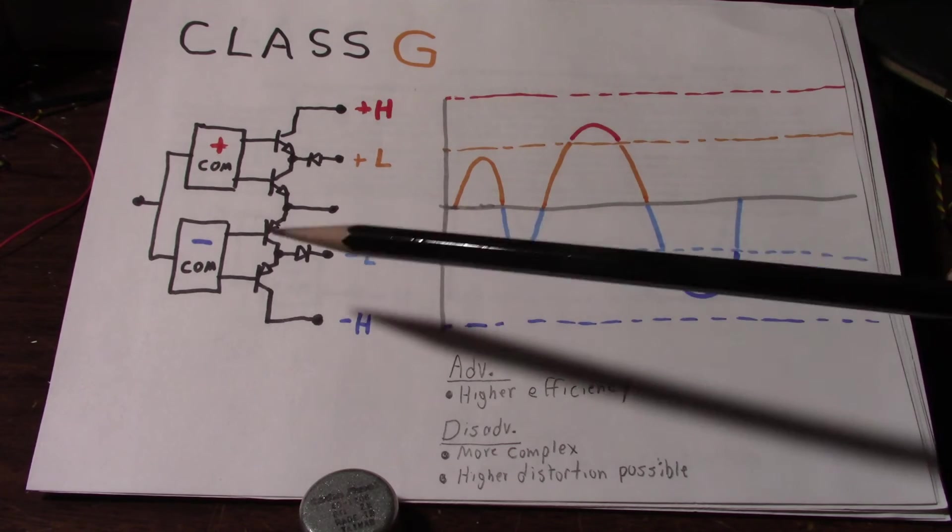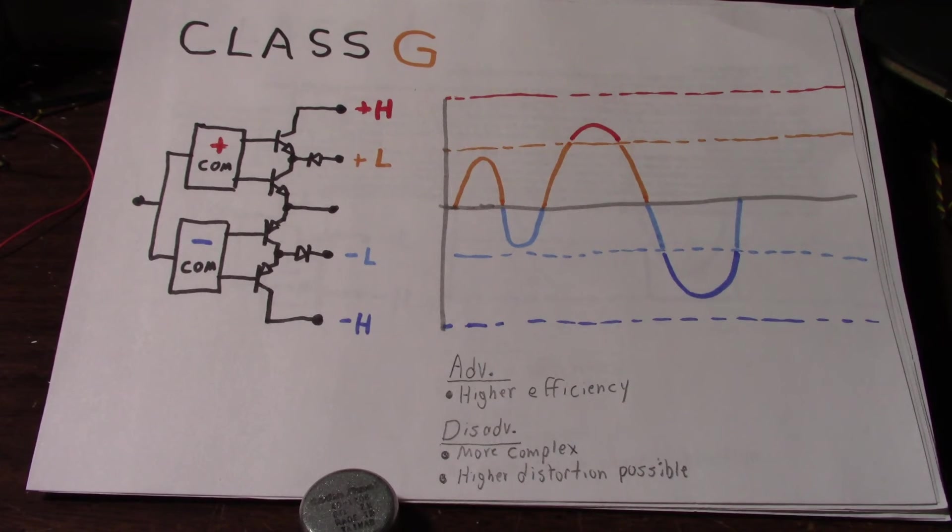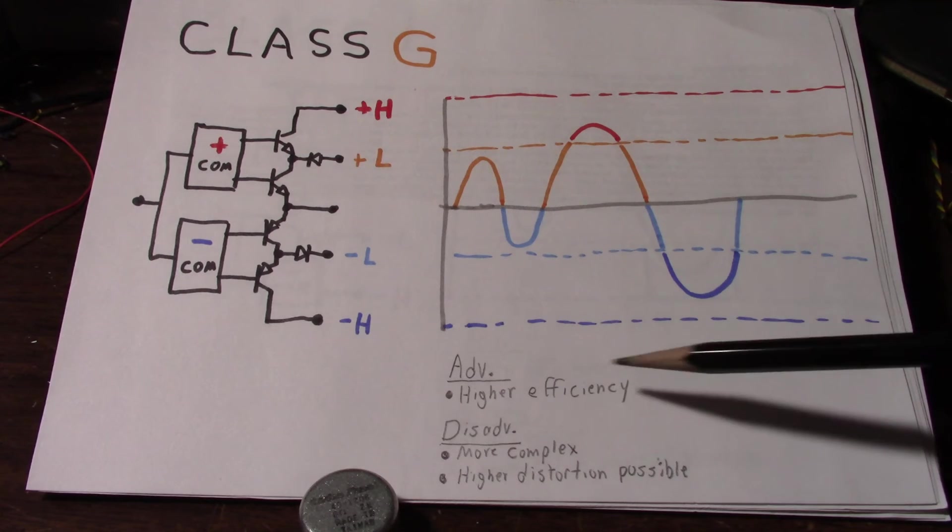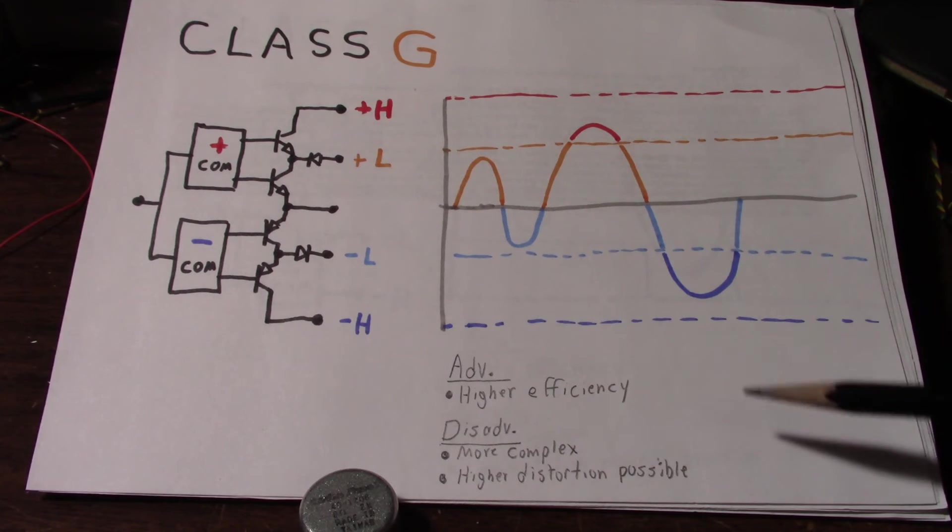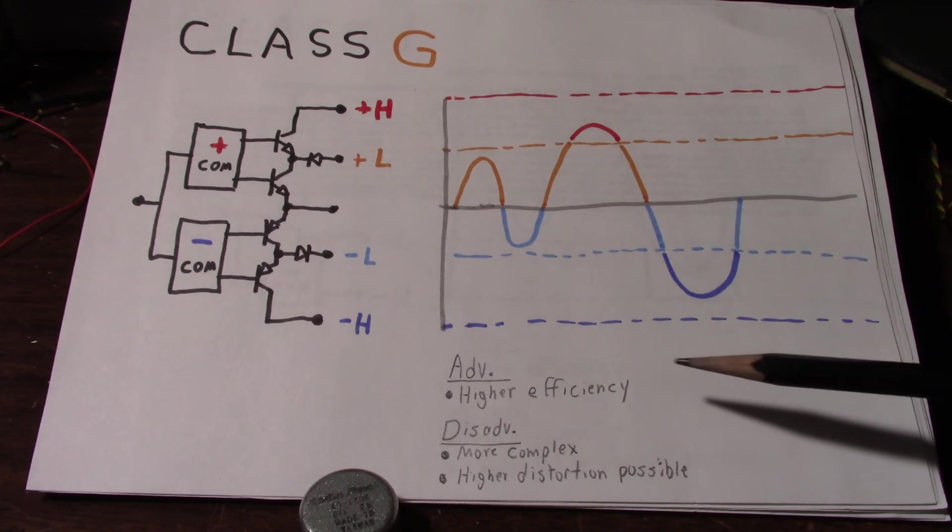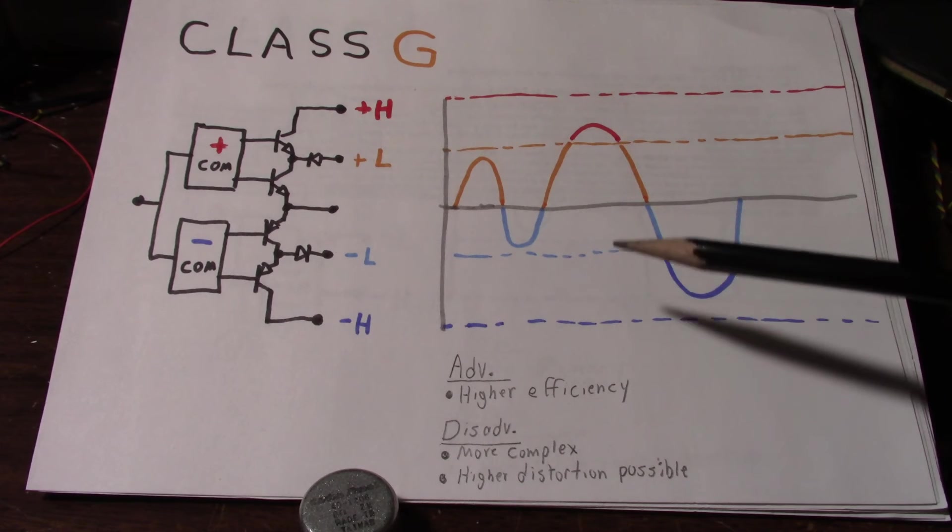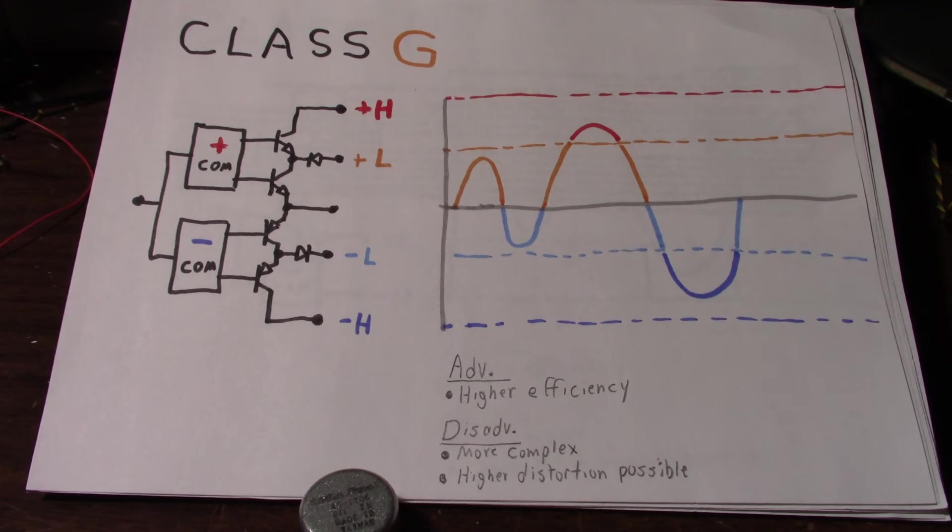One extreme example of Class G was Bob Carver's amplifiers. He took this a step further and added even a third rail and even went beyond that and added regulation to his power supplies. So that would minimize dissipation even more. And if you watch my videos, I was repairing one of those Carver M400 amplifiers. And I have a M400T amplifier where on one of the channels, the highest rail, like I said, it has three rails on each side. The highest rail is not turning on and it flat tops that waveform when you try to maximize the output. So I have to get back fixing that thing when I want to get to tearing that thing apart again. They are kind of hard to tear apart. But anyhow, that's it for Class G. Let's take a look at Class H.